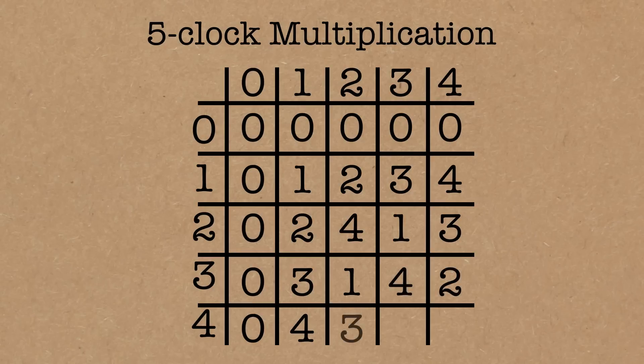4 times 2 is 8, which is 3, 4 times 3 is 12, which is 2, 4 times 4 is 16, which is 1. So I have this multiplication table for 5 clock arithmetic.